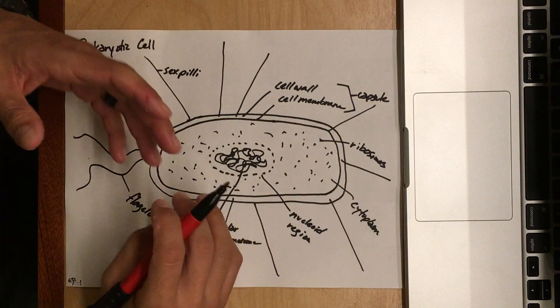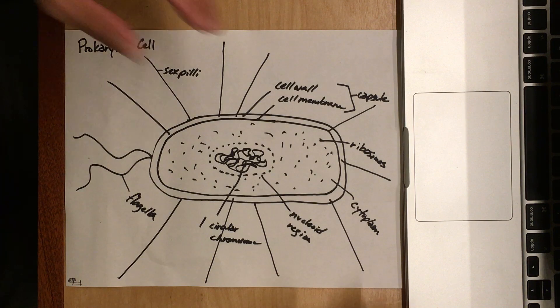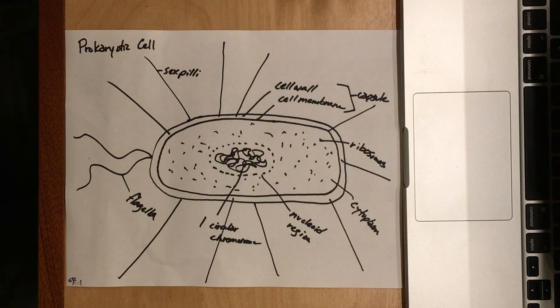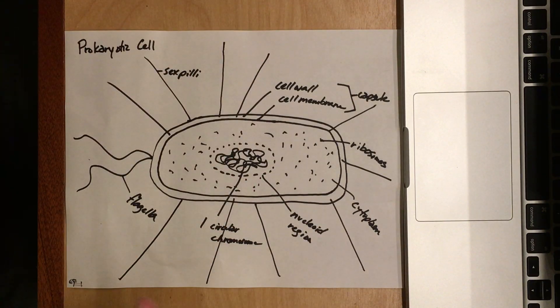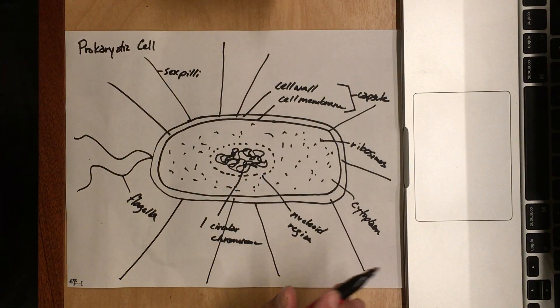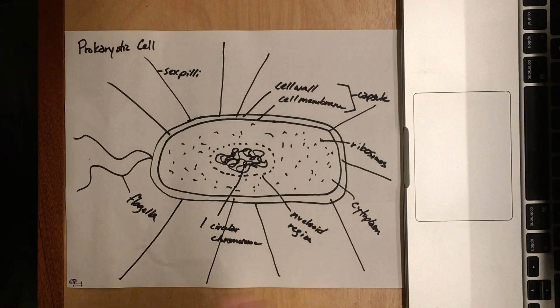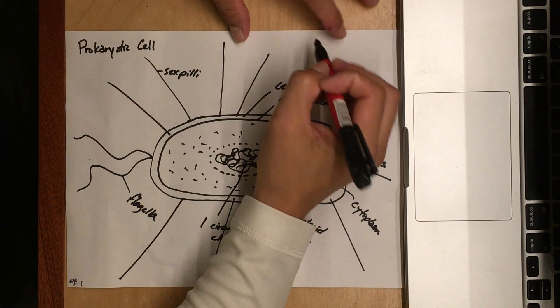It's unlikely that they're actually going to bump into another bacterial cell, so they have these things called sex pili that stick out into space, hoping they can make contact. If they do, let's imagine this is another sex pilus from a different cell—it'll make contact with this one.